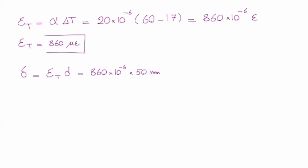So change would be 860 times 10 to the minus 6, and diameter is 50 millimeters, and that gives me the total change equal to 0.043 millimeters. And the total diameter of this hole after change of temperature would be equal to 50.043 millimeters.